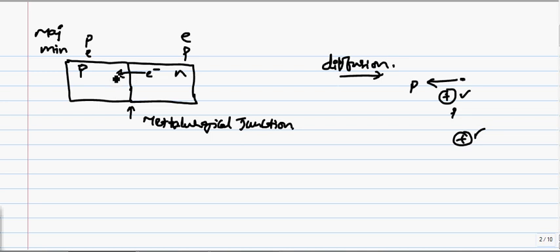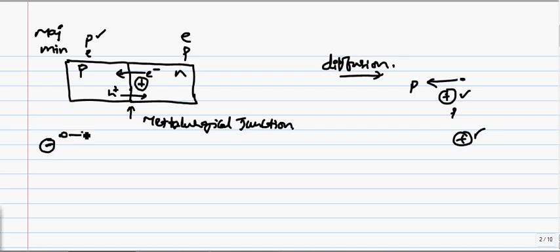Only the electron moves to the P-side, so now you have some positive ions left over in the N-side. Similarly, the majority carriers in P-type are holes, and minority carriers in N-type are holes. There is a concentration gradient, so holes move towards the N-side. As a result, you will have a boron atom with one hole — if this hole moves into the N-side, it becomes uncovered, so you will have negative ions on the P-side.